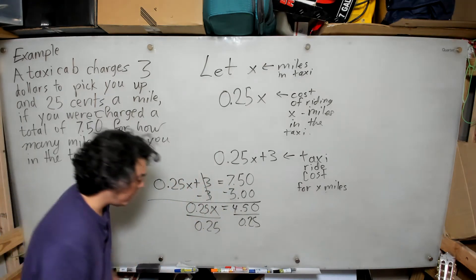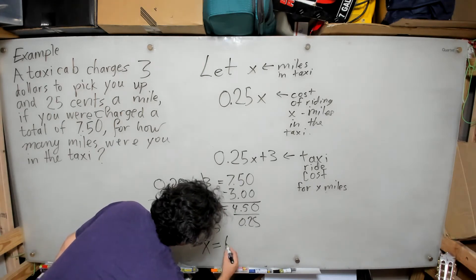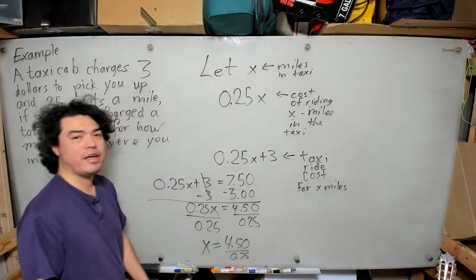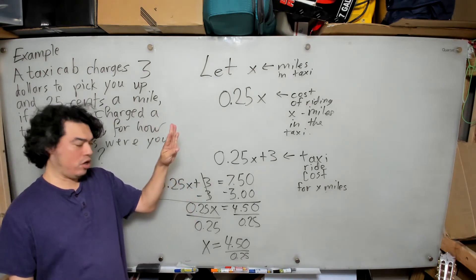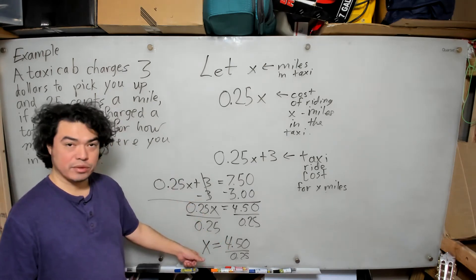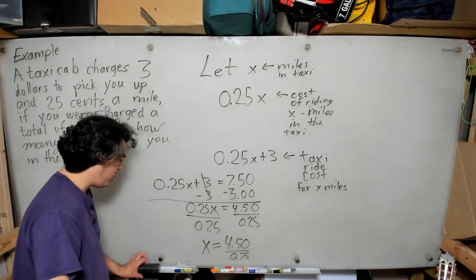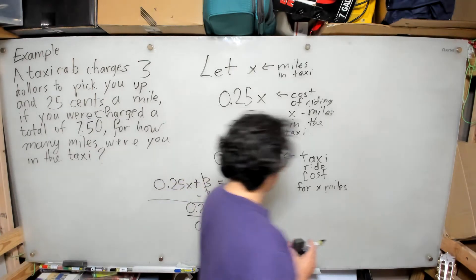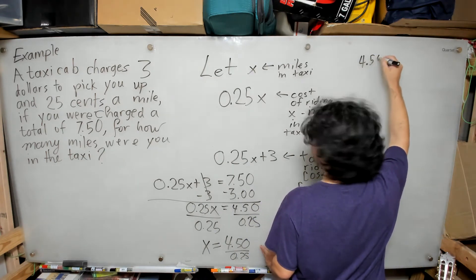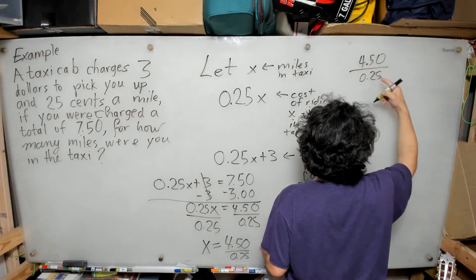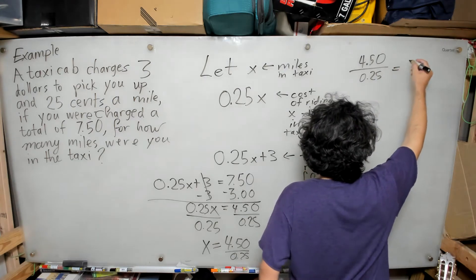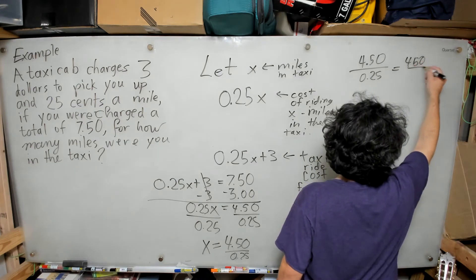That gives us x = 4.50 divided by 0.25. If I think of that in terms of quarters, I need four quarters for a dollar — I have four dollars, so that's sixteen quarters — plus two more for the fifty cents, giving eighteen total quarters. So x = 18. But let me show you this with long division: I'll divide 4.50 by 0.25 by first multiplying top and bottom by 100, giving 450 over 25.